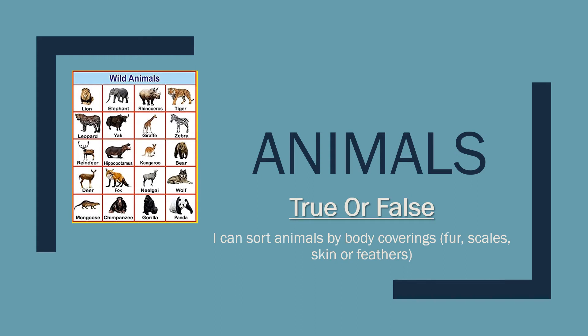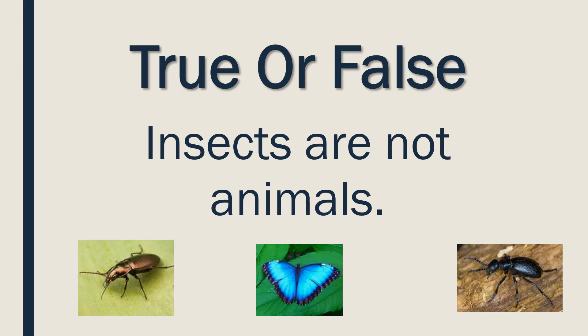Today we're going to look at different animals and decide if statements are true or false — meaning correct or wrong — so that you can sort animals by body coverings like fur, scales, skin, or feathers. True or false: insects are not animals? I'm going to give you a few seconds to decide if that is true or false.